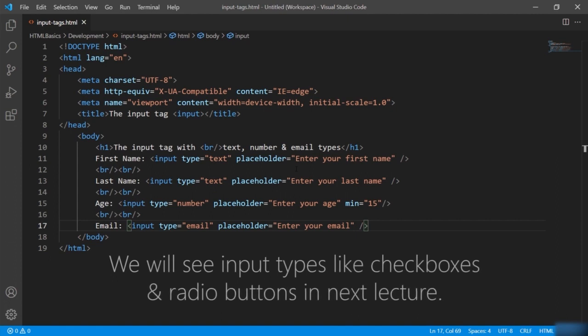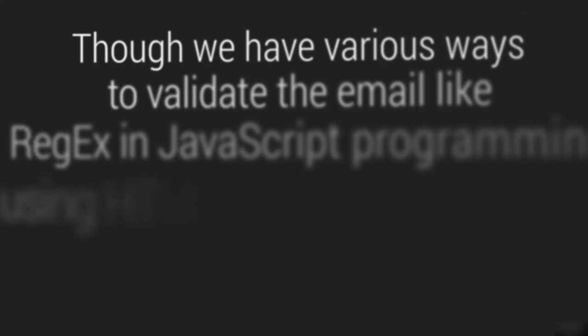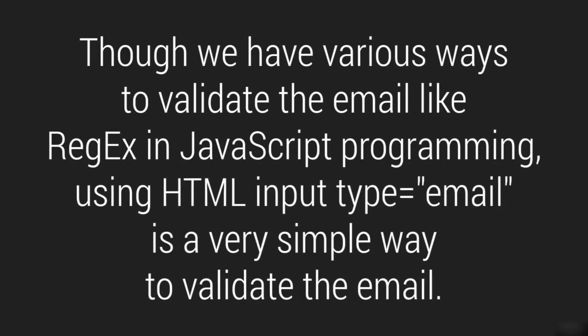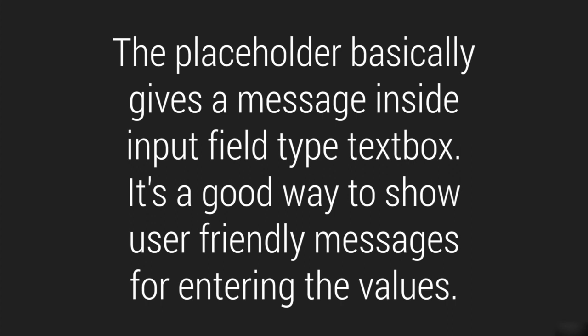We will see how to add checkboxes and radio buttons in the next lecture. Let's talk about relative questions. The question is: how can you create an input where only a valid email is allowed? While in JavaScript you have regular expressions, in HTML if you want to implement validation simply, you give type equal to email and that will do the job. The second question is: what is the purpose of the placeholder attribute? It basically gives a message inside the input field, and the moment you start typing some value, it automatically vanishes — it's a good way to show user-friendly messages for entering values.